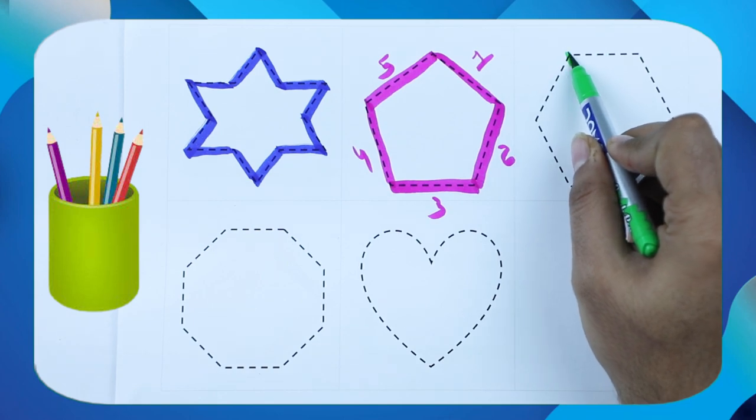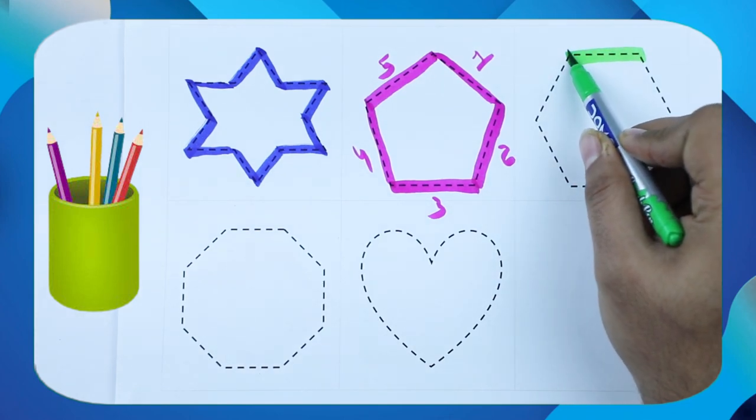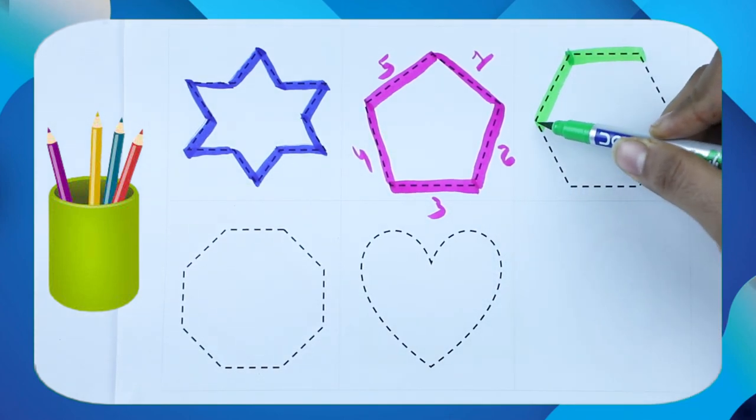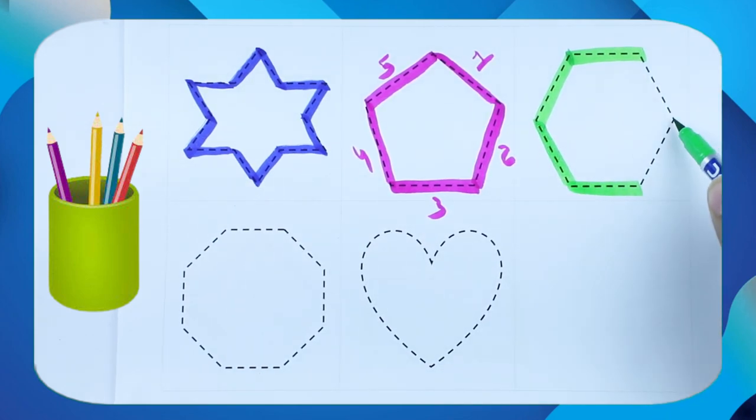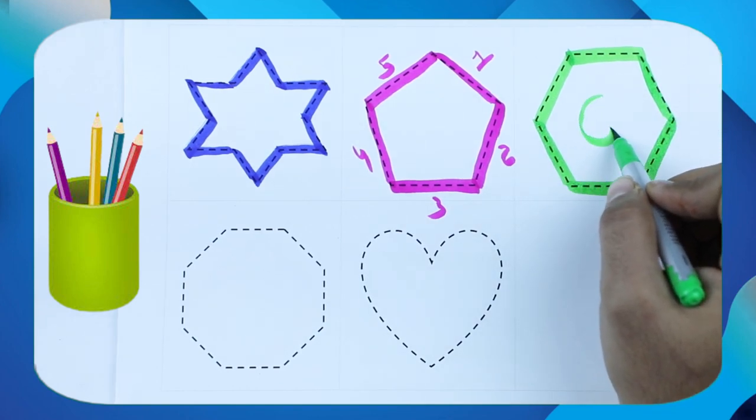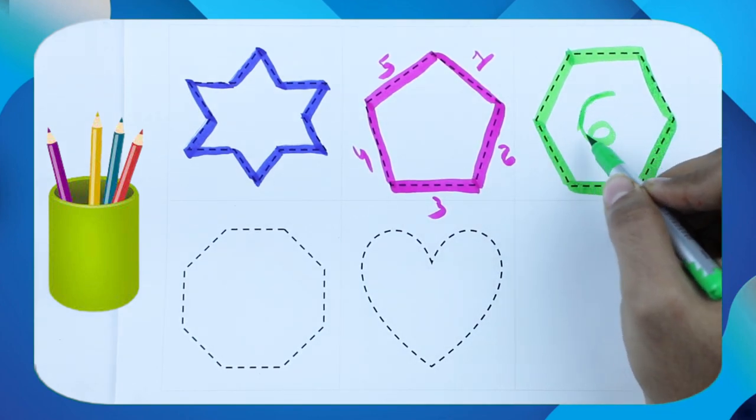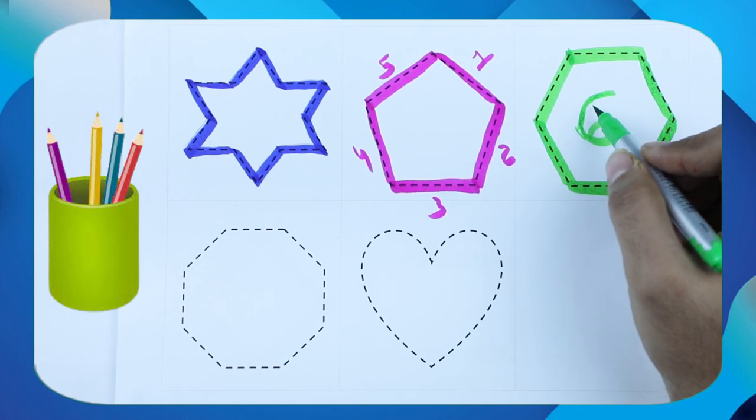Now hexagon with green color. One, two, three, four, five, six. Hexagon have six lines. It's called hexagon.